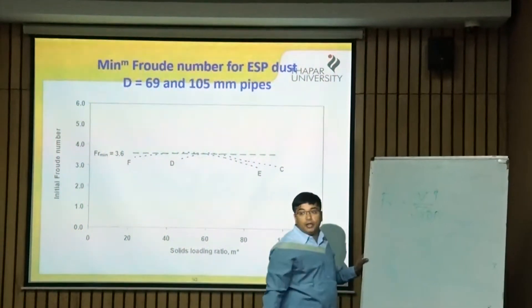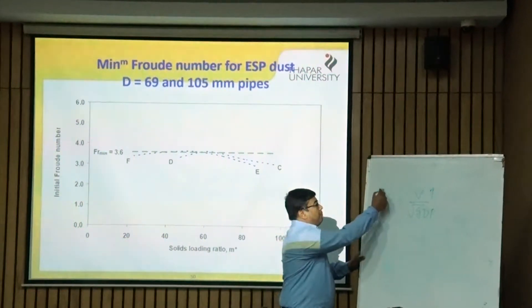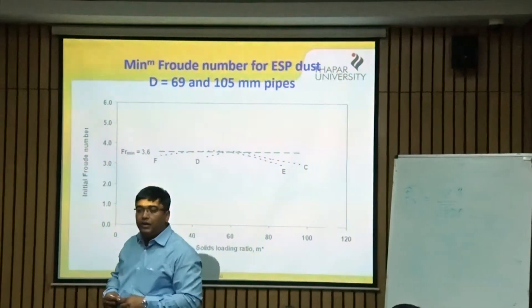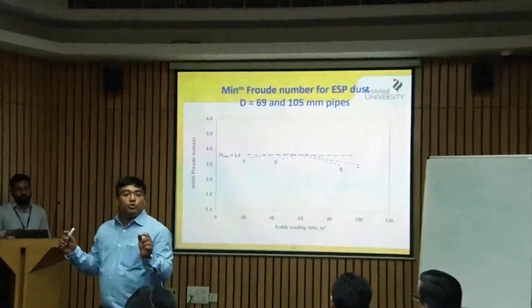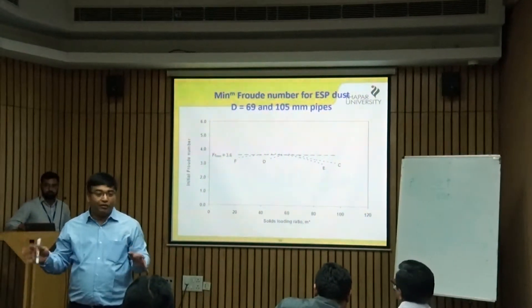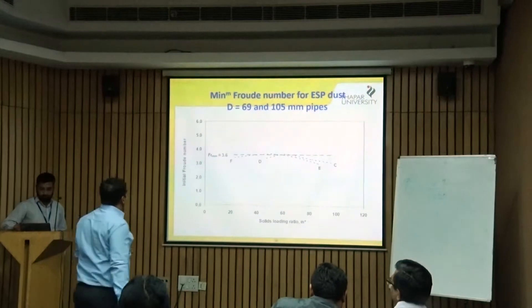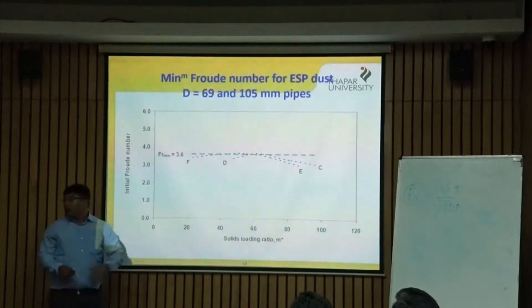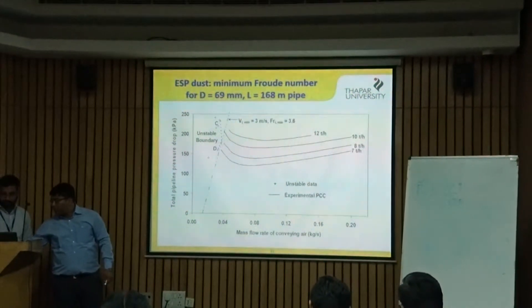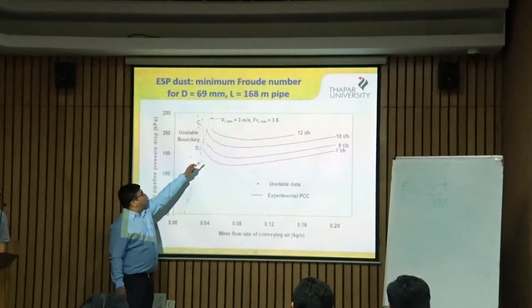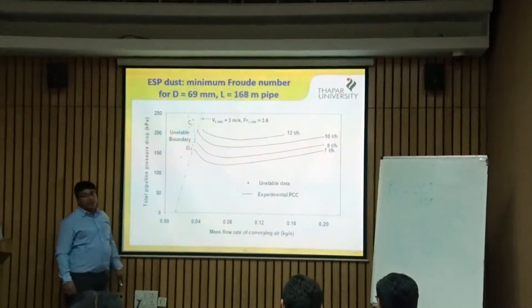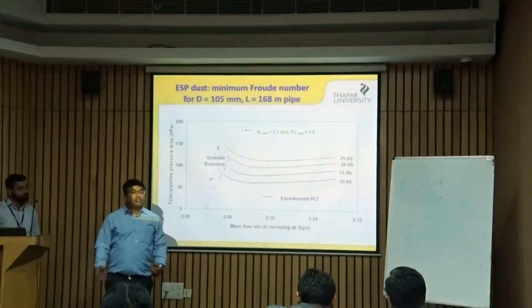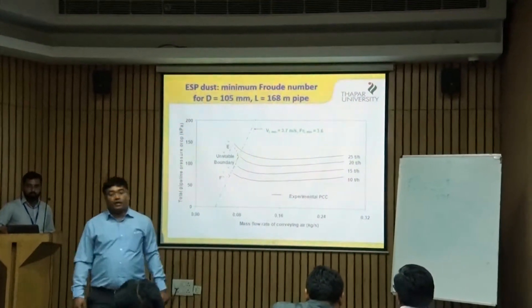Overall, your Froude number value still remains the same. We want to give a formula that will be applicable for a range of bulk solids. We found that for that particular product, both blockage boundaries — 3 m/s and 3.7 m/s — give a Froude number of 3.6, so we thought there might be something important here and decided to model the blockage boundary using Froude number.